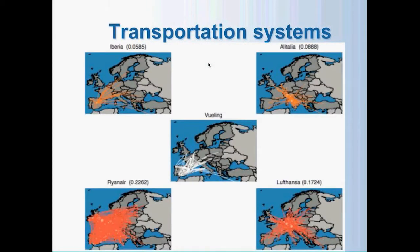Another example of multiplex networks is transportation systems. Here, I am showing pictures of air flights between different airports in Europe. Different companies fly from different airports, but the airports are exactly the same set of nodes in different layers, where every layer corresponds to a different airline company. When you transfer between companies, you use one of these airports, and that transfer between layers corresponds to switching between companies.